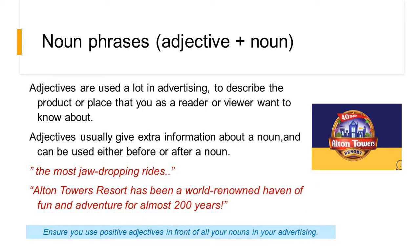Noun phrases — this is where you have an adjective plus a noun. Adjectives are used a lot in advertising to describe the product or place. They give extra information about a noun and can be used before or after it. For example, 'Alton Towers Resort has been a world-renowned haven of fun and adventure for almost 200 years.' Ensure you use positive adjectives in front of all your nouns in your advertising.